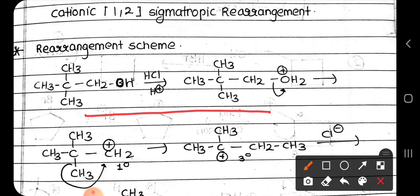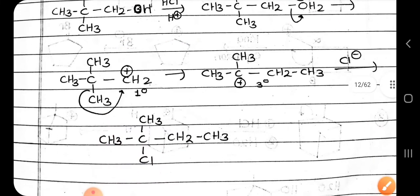In the first step, the oxygen contains a lone pair of electrons. We are adding acid to the reaction, so the acid will protonate this oxygen. As the oxygen donates its lone pair to H⁺, the oxygen will carry a positive charge. Since oxygen is highly electronegative, it cannot bear the positive charge, so this group will leave as a stable water molecule and we will get a carbocation.